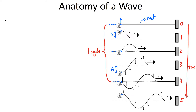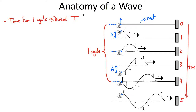The time for one cycle is what we call the period of the wave. We use the uppercase letter T to describe that, and we measure it in seconds — specifically, seconds per cycle. That is the period of the wave.